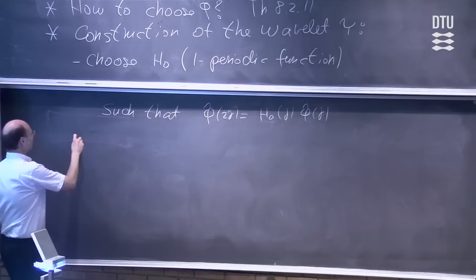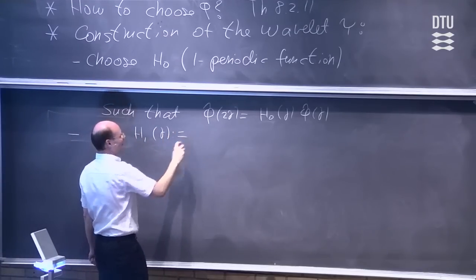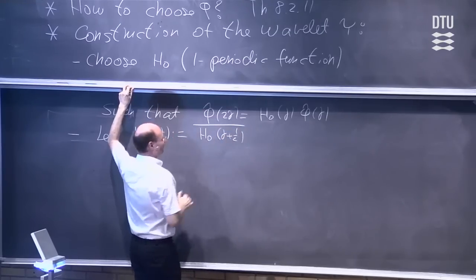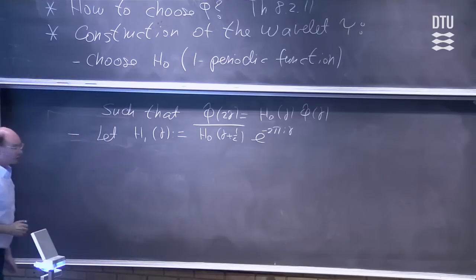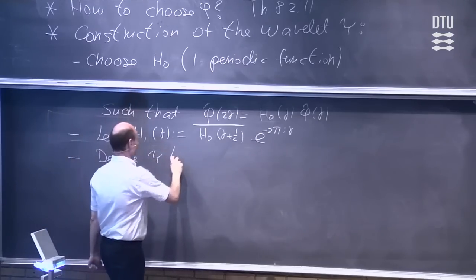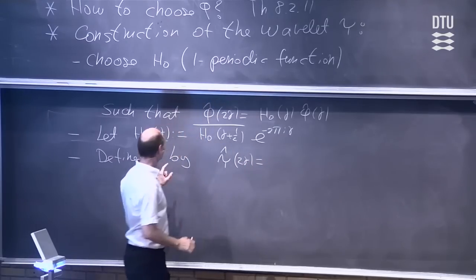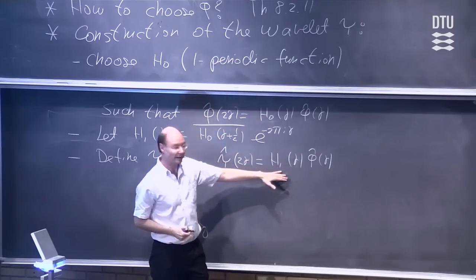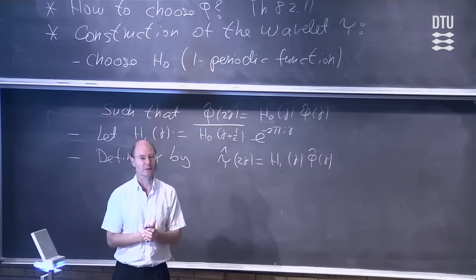After doing that, we introduce another function h1 of gamma. The way we define it is: we take h0 of gamma plus one half, complex conjugate the result, and multiply by e to the minus two pi i gamma. After that, we can define the wavelet by saying we want the Fourier transform at two gamma to equal h1 of gamma times phi-hat of gamma. Then we take the inverse Fourier transform to get rid of the factor of two, and the function psi that comes out is our wavelet.